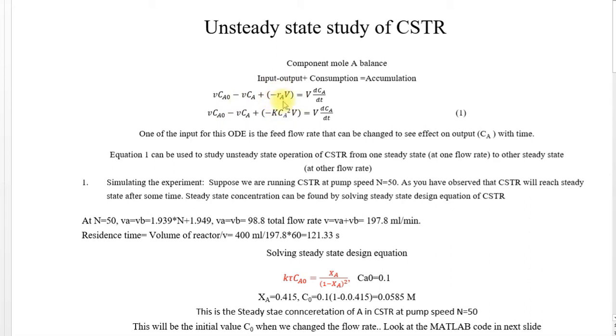Your rate is second order, so K times CA squared. This is the mathematical model governing equation for CSTR.